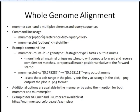MUMmer can handle multiple reference and query sequences. In this example, we'll give it one sequence so we can look at the MUMmer plots afterwards. The basic command line is: type mummer, then your options, your reference sequence, and the query sequence. To generate the plot, you run mummerplot with your options, and the match file is the output from the previous mummer command. In this example, we start with mummer, give it the --mummer flag to find maximal unique matches, the -b option to compute both forward and reverse complement matches.